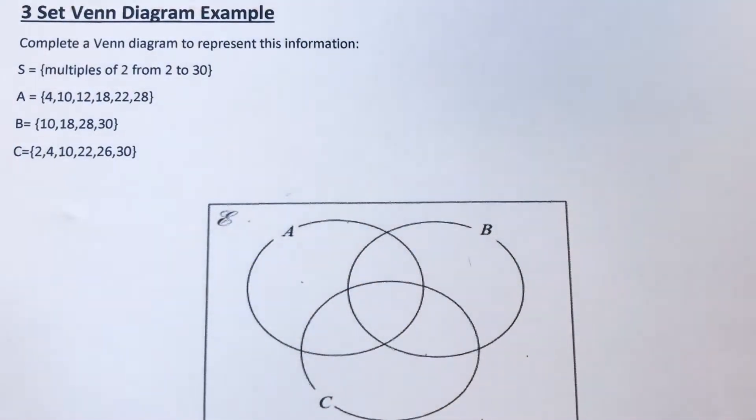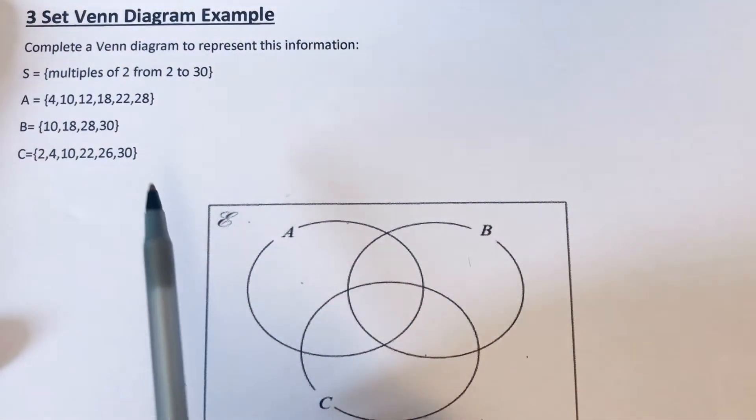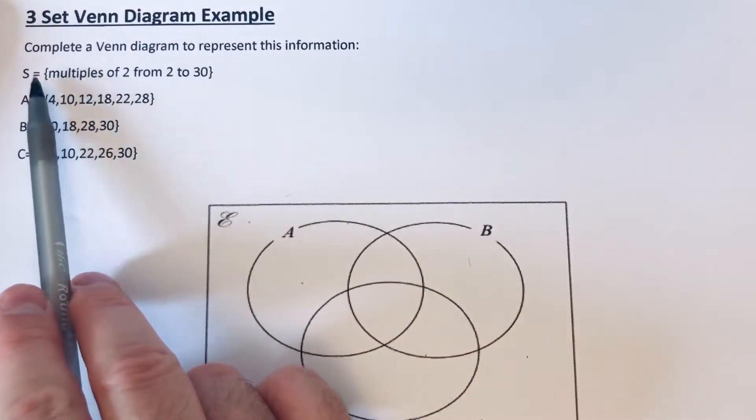Hi guys, welcome back. This is Maths 3000. Today I'm going to show you how to complete a three-set Venn diagram. So let's have a look at the example that we've got. The universal set is multiples of 2 from 2 to 30.